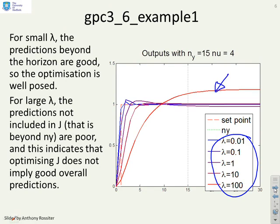But here's the more interesting point: up to a lambda of about 10 you can make an argument that these predictions within the horizon are pretty good and the steady-state error beyond the horizon is pretty good and you'd say yep I'd be happy with those. But when you use lambda equals 100 you now have a prediction which is not very good because the prediction beyond the horizon has quite a large offset and therefore if you were using lambda equals 100 then ny equals 15 would not be long enough.